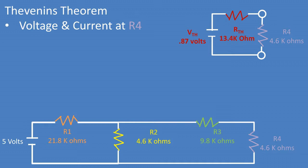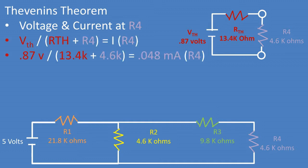We can plug in our resistance value of resistor 4 of 4.6 kilo ohms into the Thevenin circuit. We can then use our knowledge of series circuits and solve for the current of resistor 4 when plugged into the Thevenin equivalent circuit. We can take the Thevenin voltage over the total resistance of this circuit and we get a current of 0.048 milliamps.